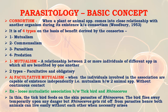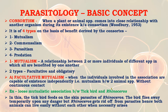Mutualism is a relationship between two or more individuals of different species in which all are benefited by one another — that is, both animals are benefited. It may be of two types: facultative and obligate. In facultative mutualism, the individuals involved in the association are capable of existence independently, that is, mutualism between two animal species without continuous contact.